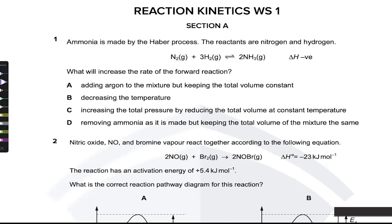Catalyst is not just for the forward reaction because it increases the rate of both sides — it lowers the activation energy so both sides are faster. Surface area doesn't matter for just the forward reaction because surface area depends on solids only, and in a reaction vessel it's unlikely that something can chop particles into smaller pieces. Also, concentration of a solid remains constant.